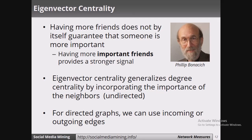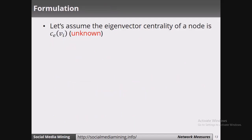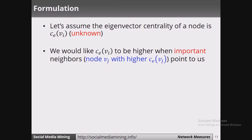In an undirected graph we will take into account all the neighbors of the nodes. Let us assume that the eigenvector centrality of a node vi is ce(vi). When my neighbors are important, my importance is also increased — this is the assumption of eigenvector centrality. We want ce(vi) to be higher when neighbors are important. If vj is my neighbor and vj is important, then my importance should also be increased.